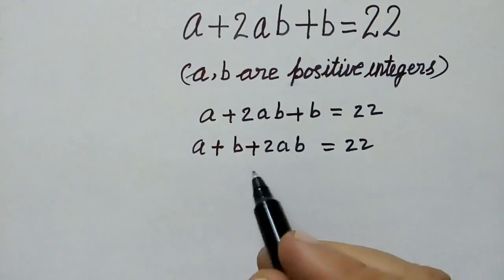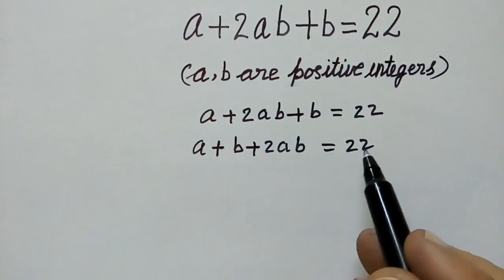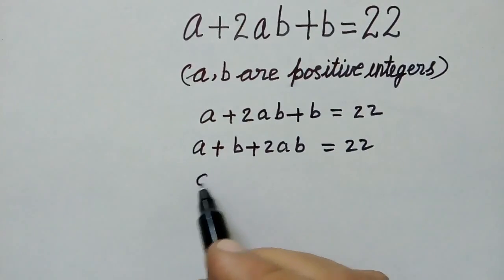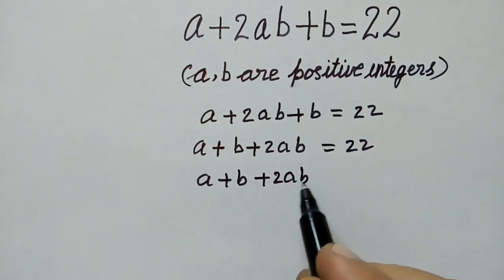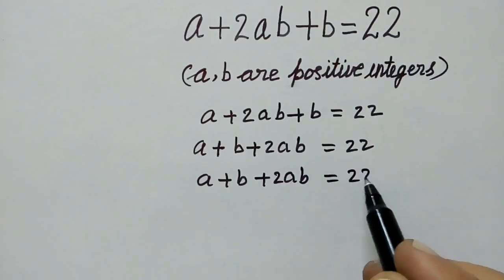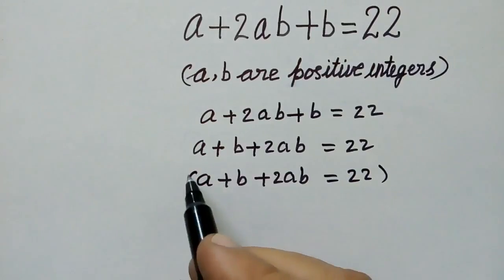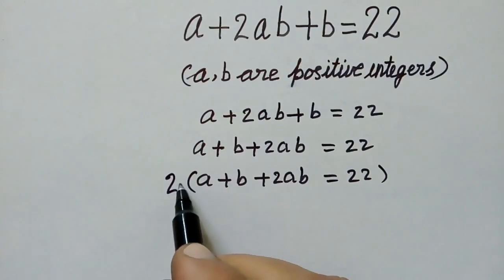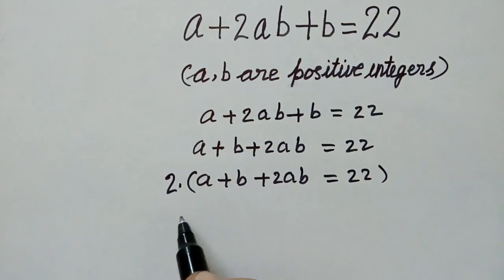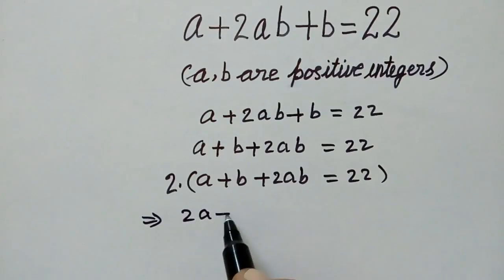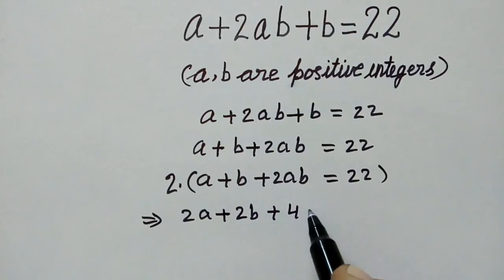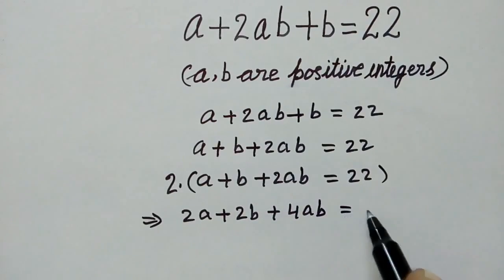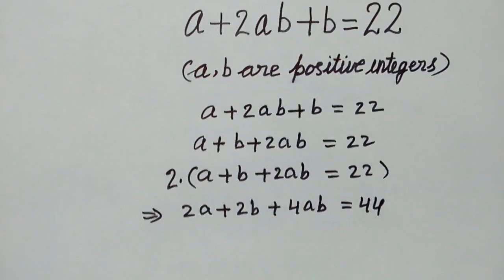In the next step, we will multiply the whole equation by 2. So a plus b plus 2ab equals 22, and multiplying through by 2 gives us 2a plus 2b plus 4ab is equal to 44.